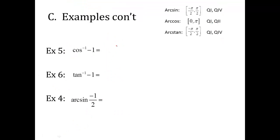Number 5: cosine inverse of negative 1. Cosine has limitations of 0 to pi, restricting to quadrants 1 and 2. Cosine represents an x value, so this asks what angle within that region has an x value of negative 1. That's at pi on the unit circle. So the answer is pi.